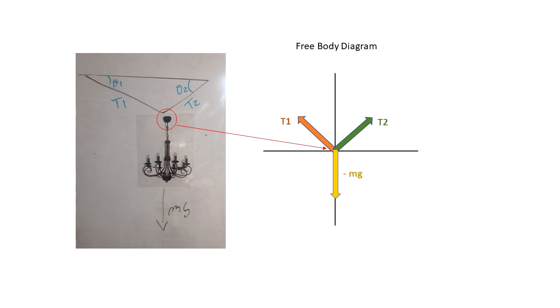So we have that tension 1 is going up to the left, tension 2 is going up to the right, and mg, that's mass times gravity, is going downwards.